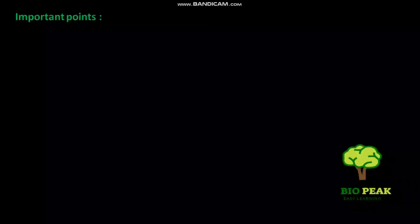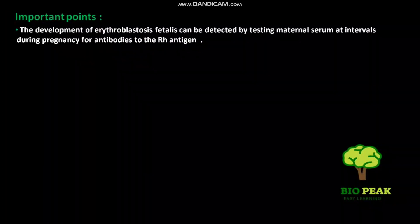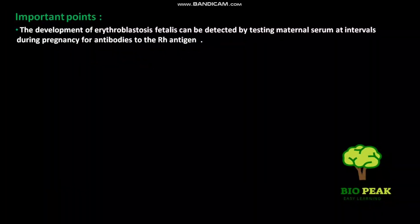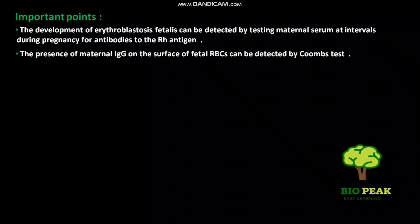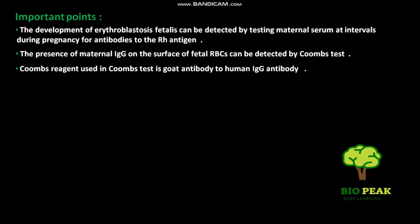The development of erythroblastosis fetalis can be detected by testing maternal serum at intervals during pregnancy for antibodies to Rh antigen. The presence of maternal IgG on the surface of fetal RBCs can be detected by a Coombs test. The Coombs reagent used in the Coombs test is a goat antibody to human IgG antibody.